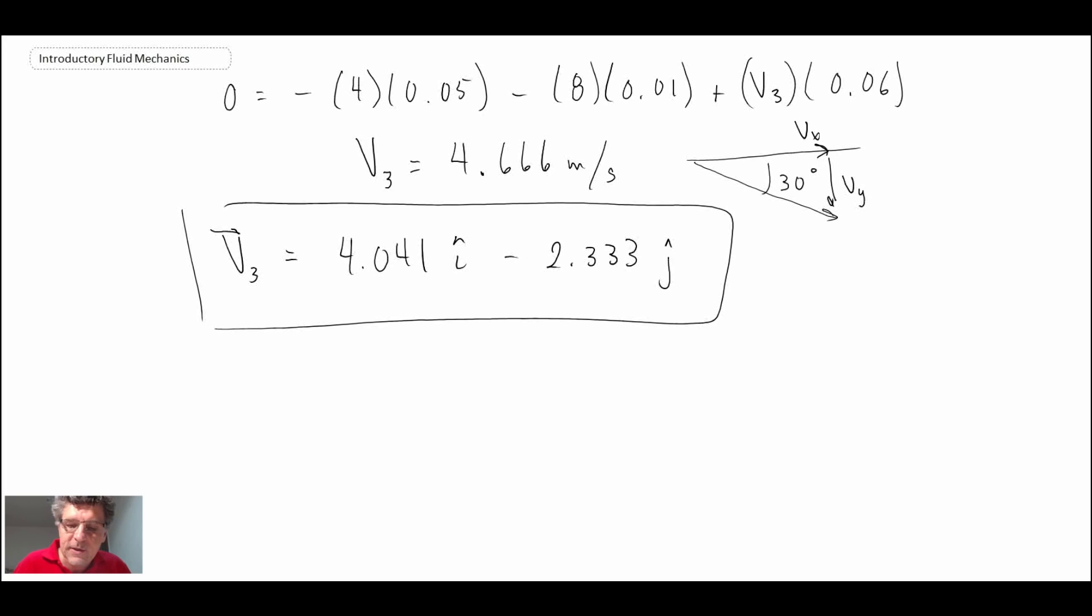So that's a pretty straightforward application of the conservation of mass or continuity equation using the control volume. Probably the trickiest part, it really isn't tricky, but you just have to be careful with the dot product and the way that you apply it and ensure that your areas are always pointed out and then whichever way the velocity vector is going, you can then work through it from there. So that concludes the problem.